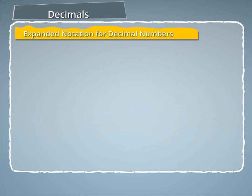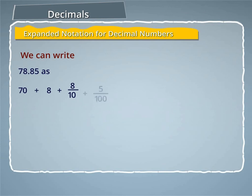Consider a few examples. We can write 78.85 as 70 plus 8 plus 8 by 10 plus 5 by 100, which is equal to 70 plus 8 plus 0.8 plus 0.05.